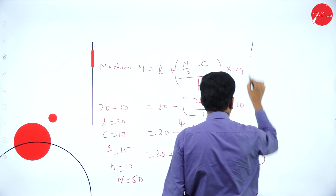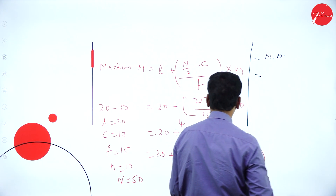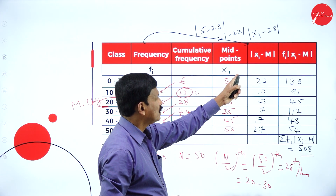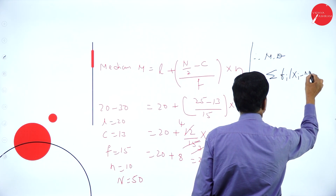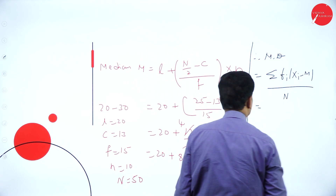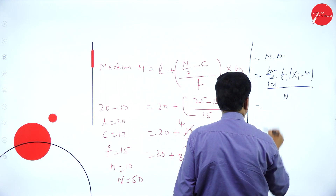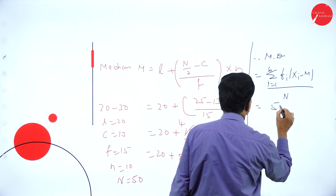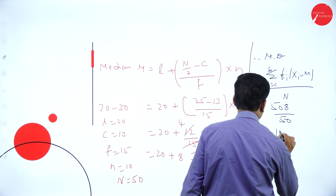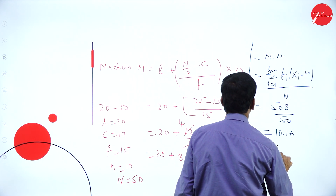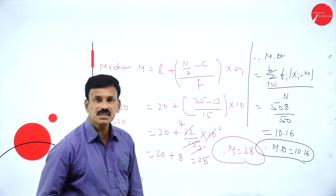Therefore, the mean deviation about the median is given by the formula: sigma Fi mod Xi minus M divided by N, where i equals 1 to 6. Sigma Fi Xi equals 508 divided by N which is 50. This is equal to 10.16. Therefore the mean deviation is equal to 10.16.